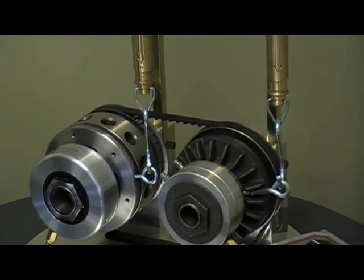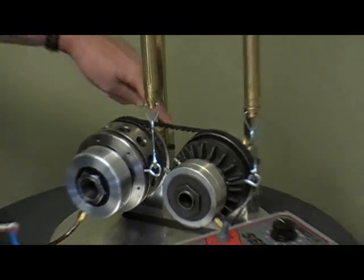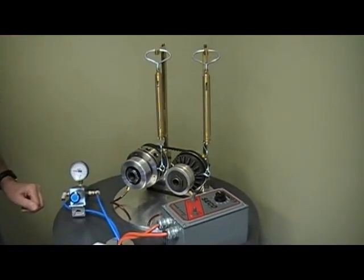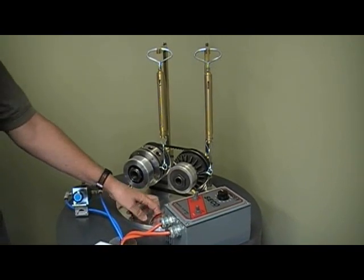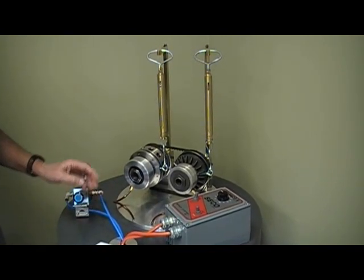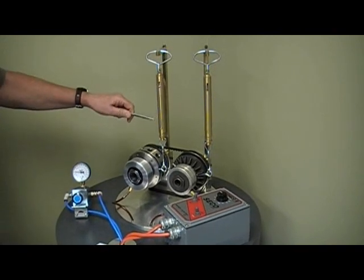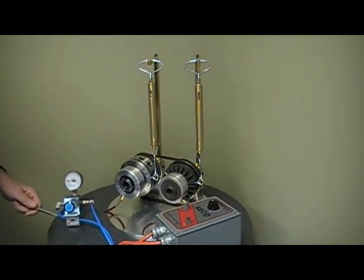You'll see here that both of these clutches are connected by a common belt to a drive below the table, so they're both seeing the same input. They're both connected to a common air supply and being reacted by identical spring scales.